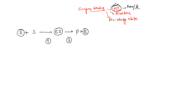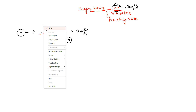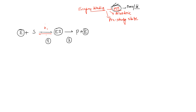The first stage, where enzyme and substrate come together to form the enzyme-substrate complex, is reversible. The rate constant for the forward reaction is k1, and the rate constant for the reverse reaction is k-1. The second step — conversion of enzyme-substrate complex to product plus enzyme — is irreversible, with rate constant k2.